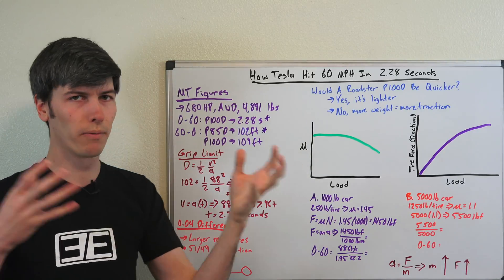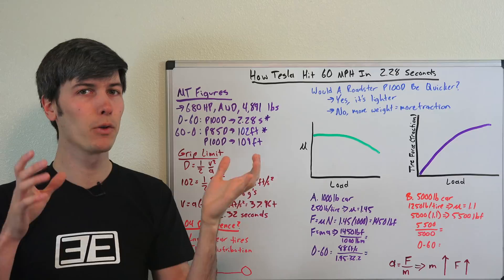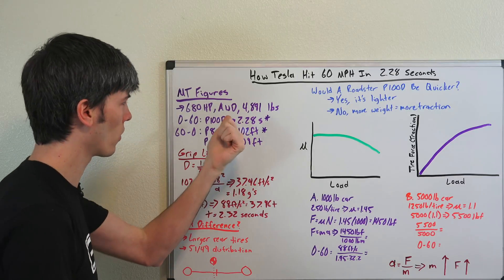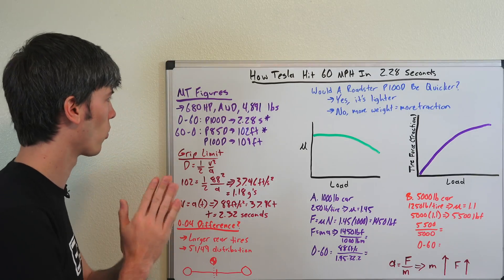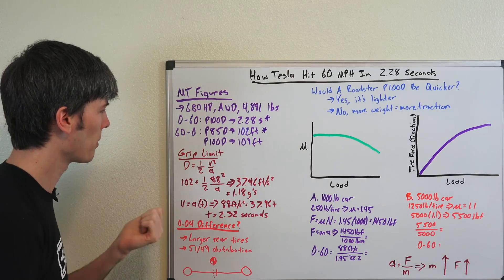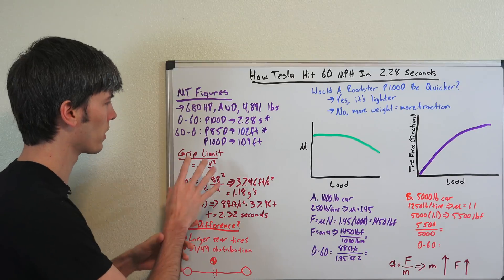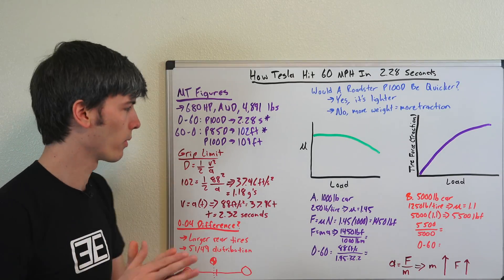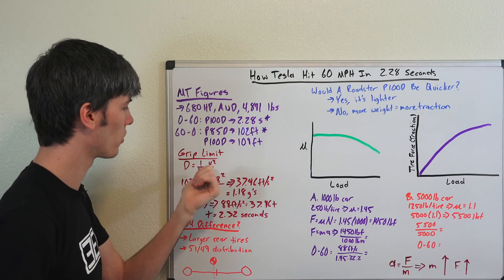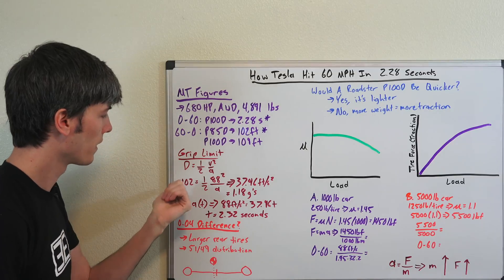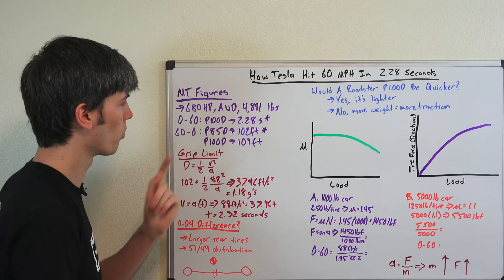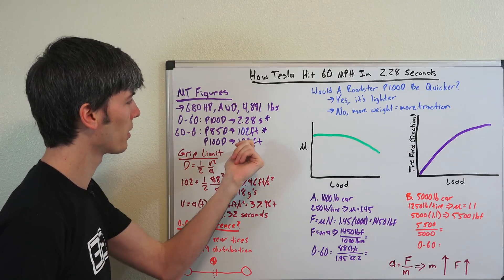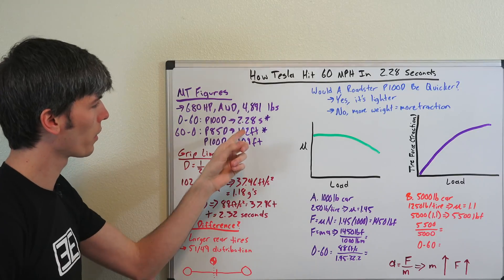So the reverse logic is if you can decelerate that fast, if you have enough power which this car does, it's got plenty of horsepower, then you can accelerate at that same rate. So that grip limit, as discussed in that video if you want the derivation for these equations, you might want to check that out. But distance equals 1 half velocity squared divided by acceleration. The distance that Motor Trend was able to stop with a P85D was 102 feet.